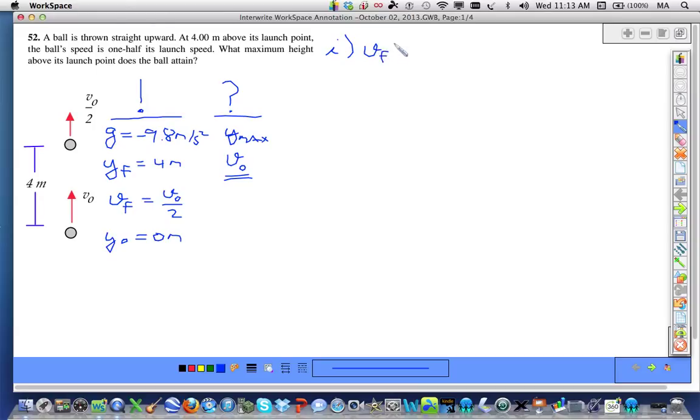using the second basic kinematic equation. So, we have vf squared is equal to v-naught squared plus 2g delta y, which is yf minus y-naught.